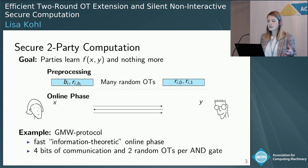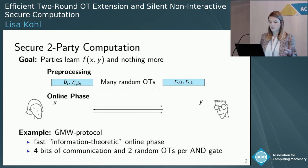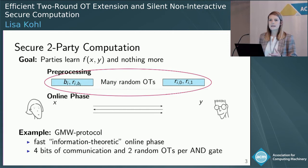Once the inputs are known, you can execute a very efficient online phase. For example, with the GMW protocol, once you have many OTs — where the messages of Bob are random and the choice vector of Alice will also be random — then with almost no overhead, you can execute the online phase with only four bits of communication, using two random OTs per AND gate. The difficult part is how to make the pre-processing efficient.